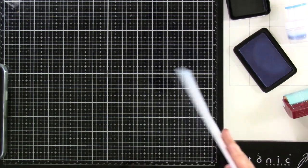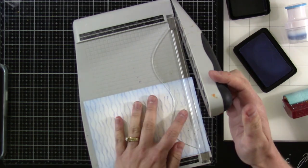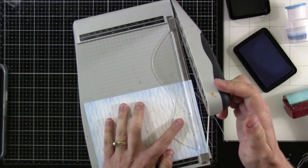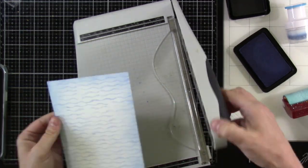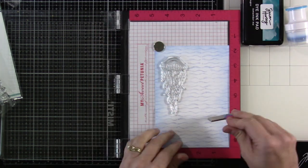I used a blending buddy and blended some of that ink on the background. Then I got to thinking I should probably trim some of that off. So I'm going to trim off about a sixteenth or an eighth of an inch off of all four of those sides. I just want a slight border when I put that on my five by seven card base.